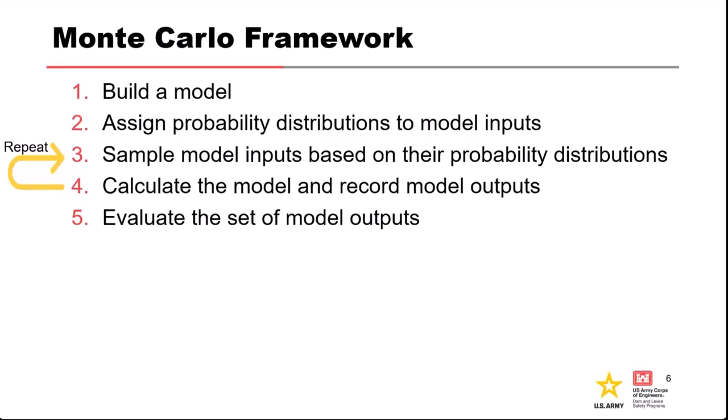You plug those random samples into your model and calculate and record the results. For the concrete dam example, you randomly sample a friction angle and unit weight of concrete, plug that into all the formulas in your model, and get out a factor of safety or margin of safety — then record that output. You then do that again, generating another independent random sample of all the inputs, calculate the factor of safety, record it, and repeat — often thousands to tens of thousands of times.